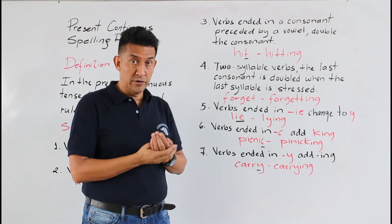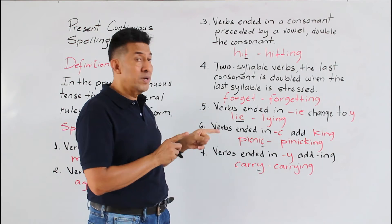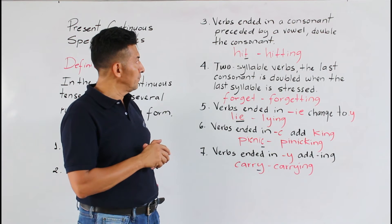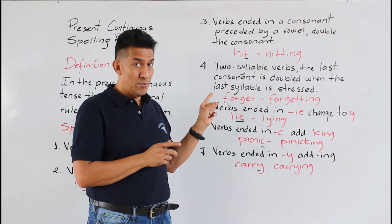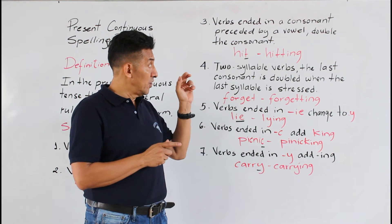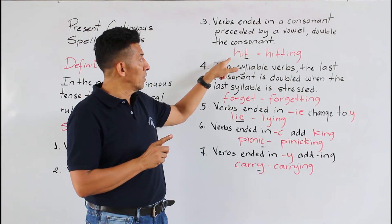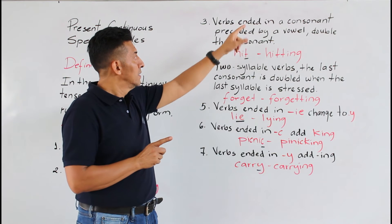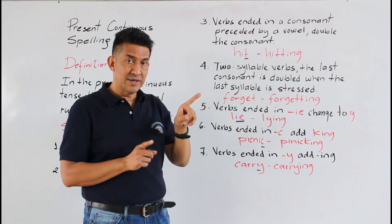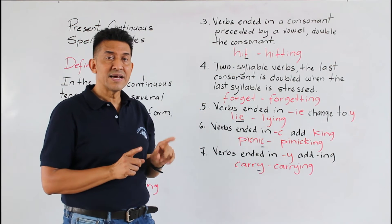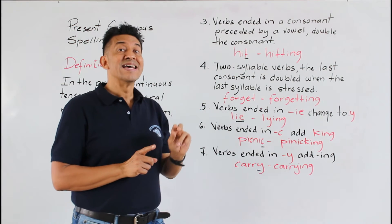La regla número tres dice que los verbos que terminan en una consonante precedida por una vocal, se duplica la consonante. Y tenemos un ejemplo que termina con una consonante — en este caso la consonante es la letra T.